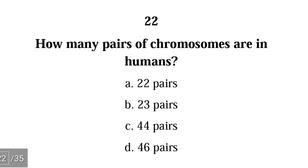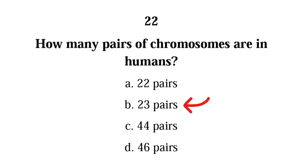Number twenty-two: how many pairs of chromosomes are in humans — 22 pairs, 23 pairs, 44 pairs, or 46 pairs? The correct answer is B, 23 pairs — there are 23 pairs of chromosomes in humans.